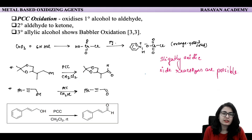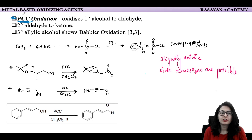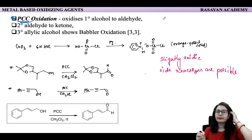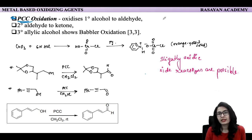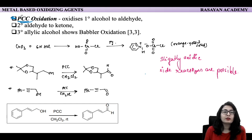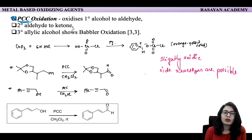Now let us talk about PCC oxidation — pyridinium chlorochromate. Before studying PCC, there is one more reagent considered briefly: Collins reagent. The Collins reagent is a bit better than Jones reagent because it is not too acidic — it is neutral. But it is hygroscopic in nature and is required in excess for any oxidation. So we are not going to study Collins reagent in detail; we directly move on to PCC oxidation.